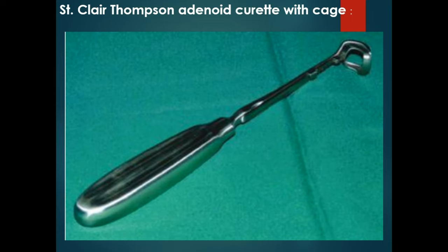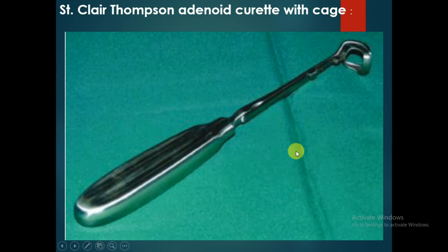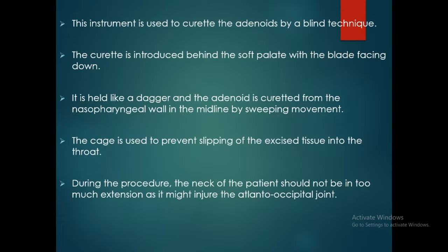Let's start with the Sinclair Thompson adenoid curette with cage. This instrument is used to curette the adenoids by a blind technique. The curette is introduced behind the soft palate with the blade facing down. It is held like a dagger, and the adenoid is curetted from the nasopharyngeal wall in the midline by a sweeping movement.